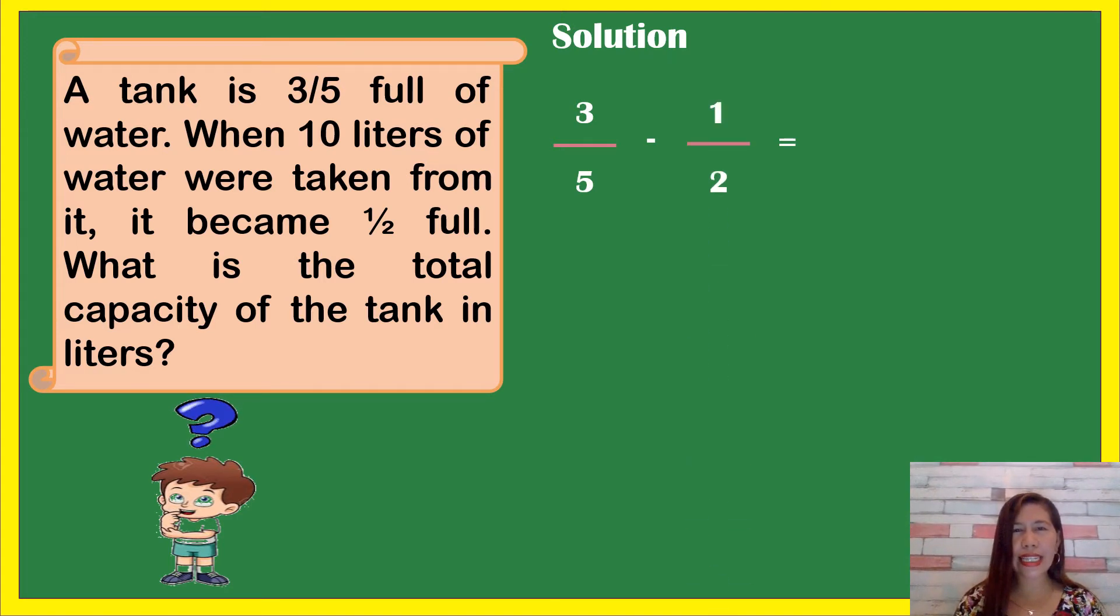As we see, our fractions are dissimilar fractions. To find our difference, we're going to use the cross product method. Multiply 3 times 2, which gives 6, minus 5 times 1, which equals 5, over 5 times 2. The answer equals 10.